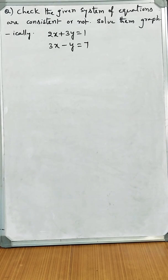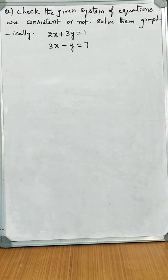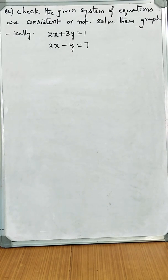Welcome to NG Maths channel. Today I would like to discuss a question from a pair of linear equations. The question is: check the given system of equations are consistent or not, and solve them graphically. I have taken two equations: 2x plus 3y is equal to 1, and 3x minus y is equal to 7.